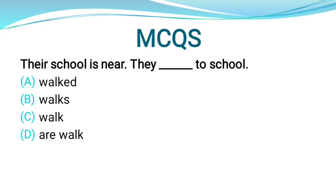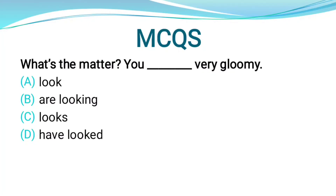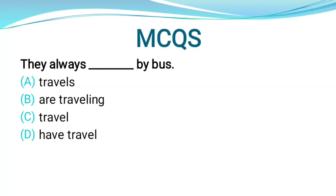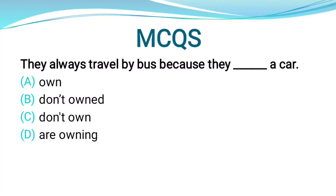Example: 'Their school is near, they ___ to school' — they walk to school. Simple Present tense is used. Another example: 'What's the matter? You ___ very gloomy.' Verbs like 'look', 'seem', 'appear' use Simple Present tense — 'you look very gloomy', not 'you are looking'. These are feeling/state verbs. 'They always ___ by bus' — 'they always travel by bus because they ___ a car' — 'they do not own a car' is the correct option.